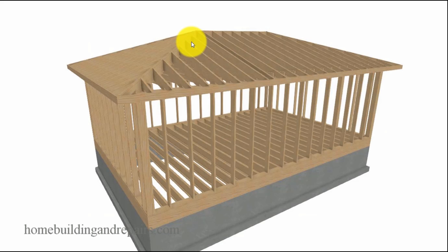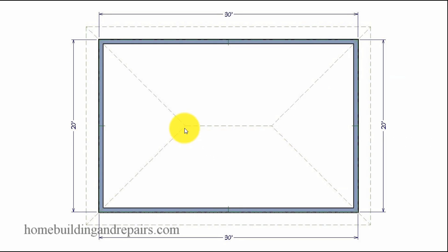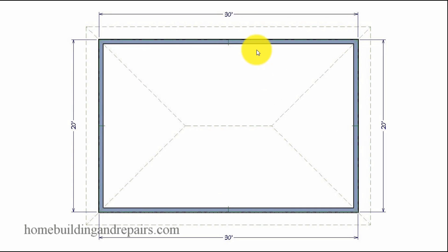A hip roof isn't going to be much more difficult to figure out once you know the secret. All you need to do to figure the ridge on a hip roof is subtract the width of the building from the length of the building if you have a rectangle. And of course that would be 10 feet.